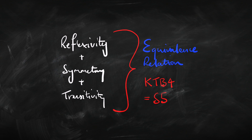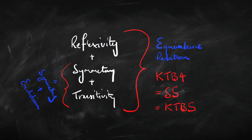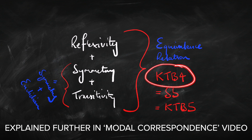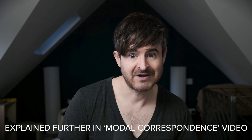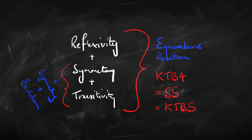We get a partition model when we have an accessibility relation that is reflexive, symmetrical, and transitive. But we can also get a partition model when our accessibility relation is reflexive, symmetrical, and Euclidean — because symmetry plus Euclideanness gives us the same effect as symmetry plus transitivity. So KTB4 — that is, normal modal logic plus reflexivity (T), symmetry (B), and transitivity (4) — is the same logic, the same class of partition models, as KTB5 — normal modal logic plus the T-axiom, the B-axiom, and the 5-axiom (Euclideanness). These are also called S5. So these three names pick out exactly the same logic.